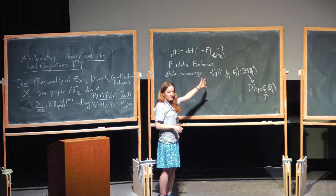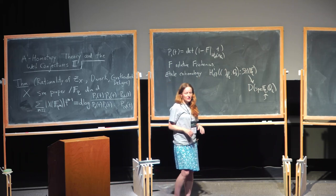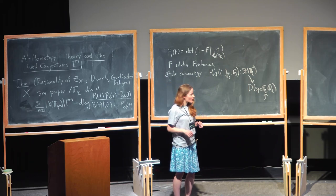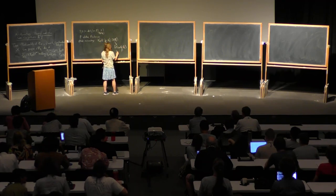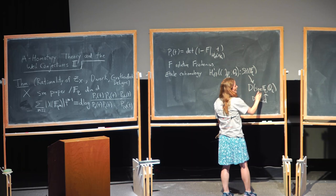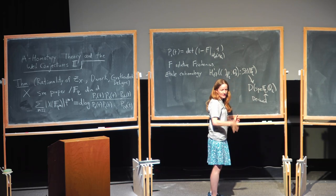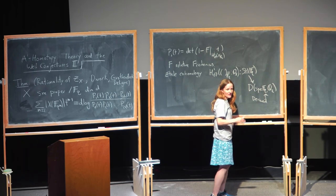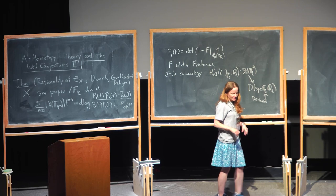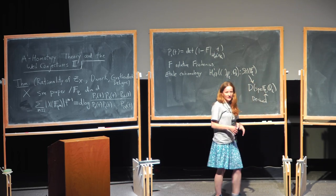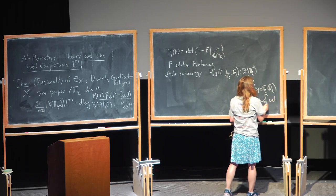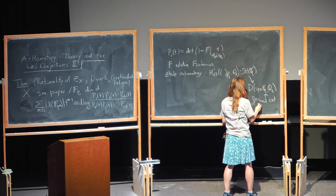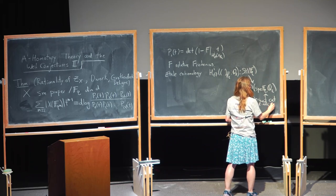We have this cohomology theory that gives us a chain complex — some Q_ℓ vector spaces for smooth proper varieties. One of the things about étale cohomology is that the étale sheaves on Spec K are like vector spaces with a Galois action. So this is a derived category of ℓ-adic sheaves.